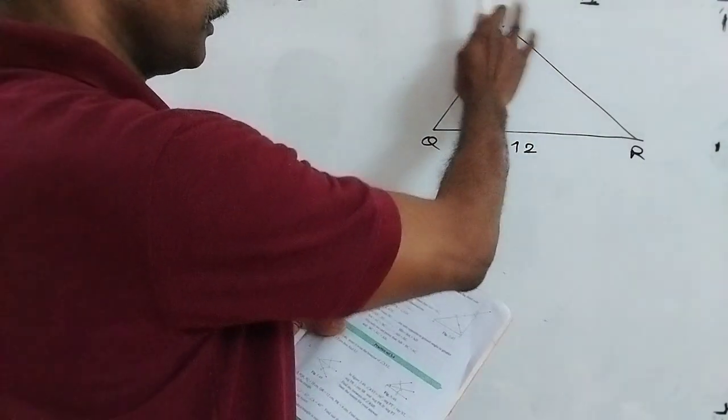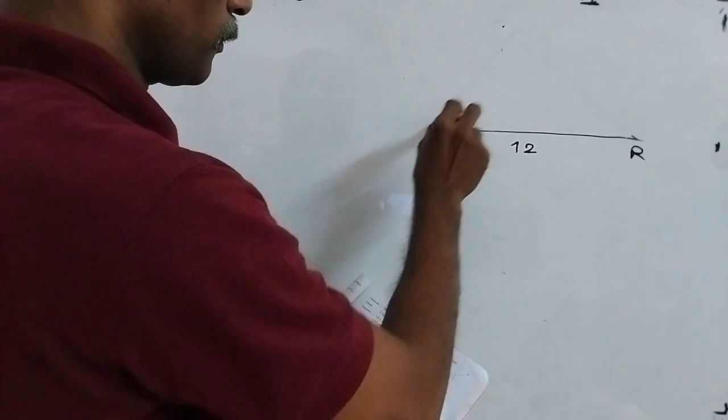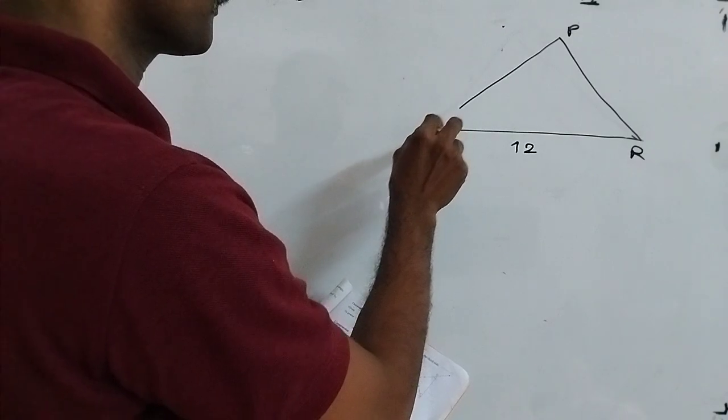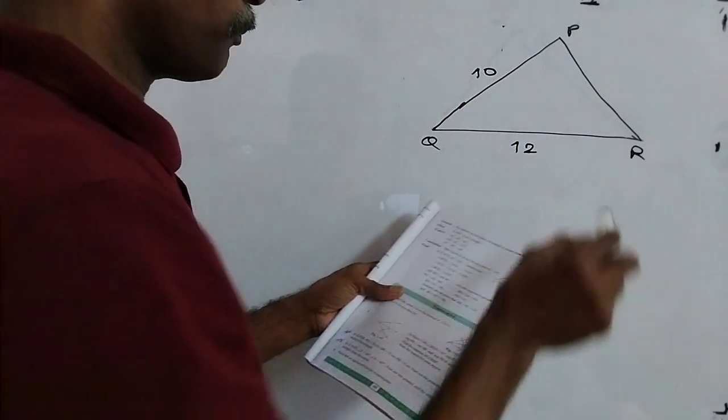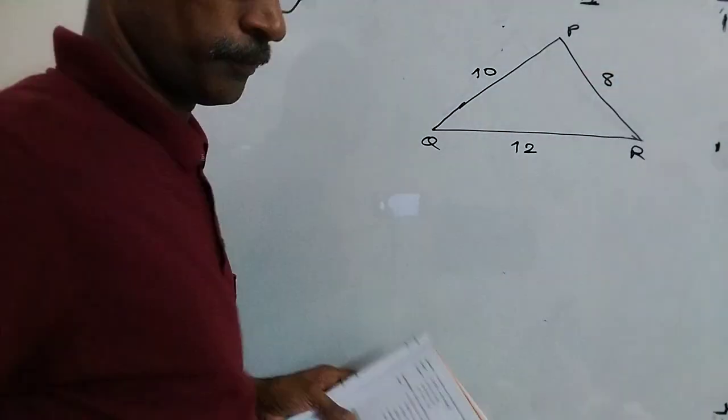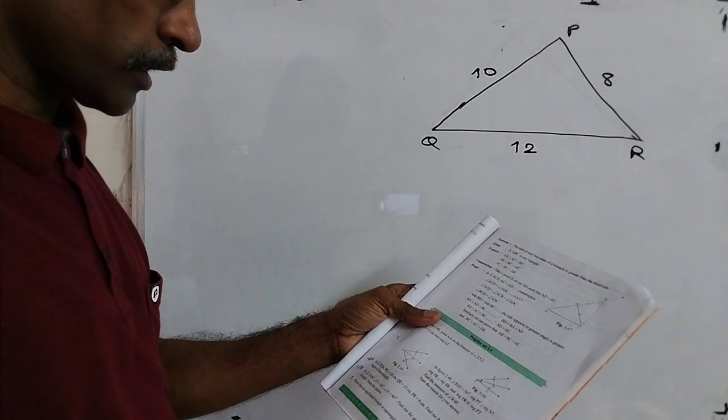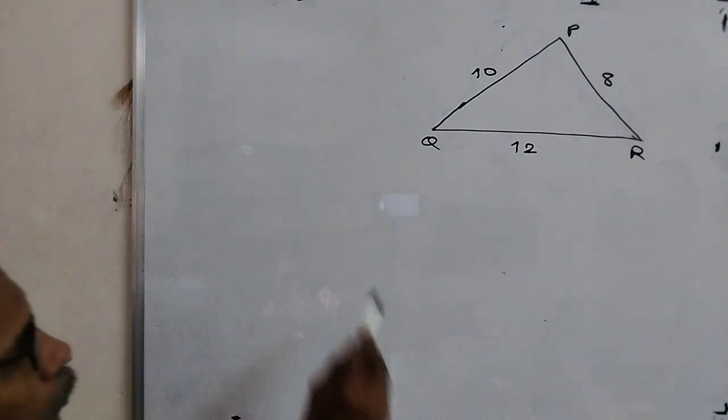PQ, then we draw this. We want PQ greater. PQ is 10, and PR is 8. Then question: find out the greatest and the smallest angle of the triangle, now PQR.